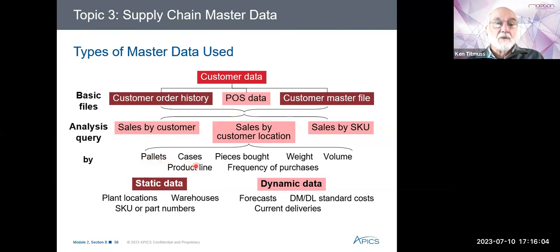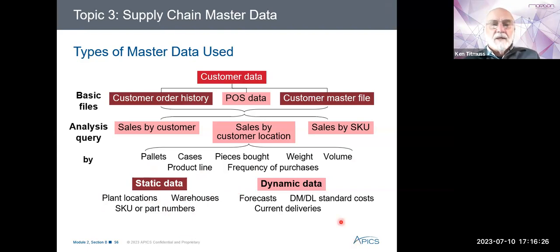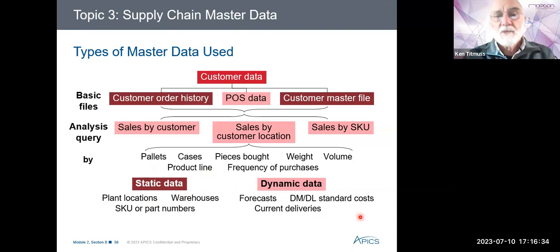We can query those databases and get information out: how many pallets, cases, or pieces did they buy? What was the weight, volume, and price? Static data will be things like plant locations, warehouses, and part numbers. Dynamic data will be things like forecasts and current deliveries — those things that are changing all the time.